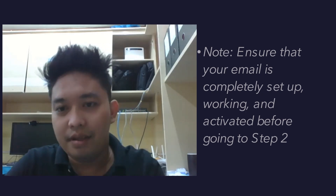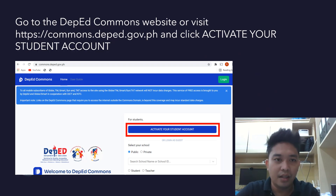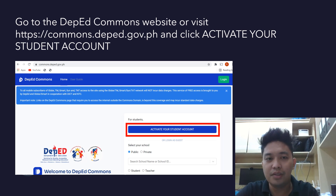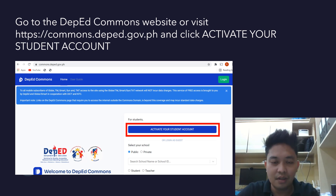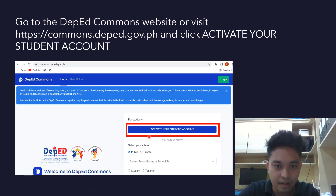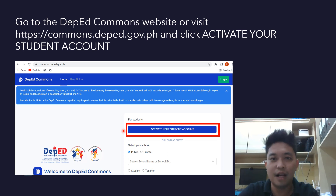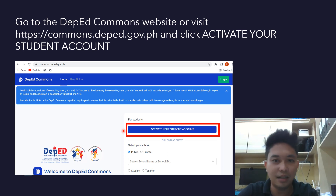After that, go to the DepEd Commons website at commons.deped.gov.ph. This is the landing page of DepEd Commons. On this page, you will see a button — click 'Activate Your Student Account'.